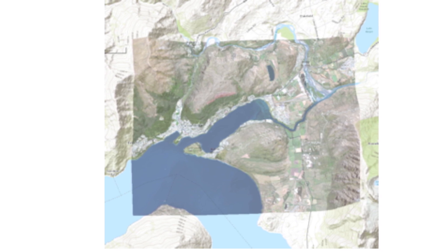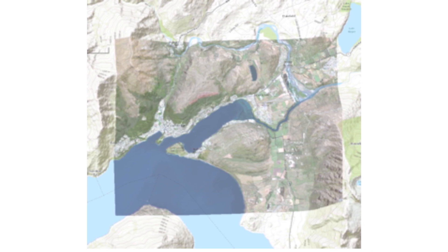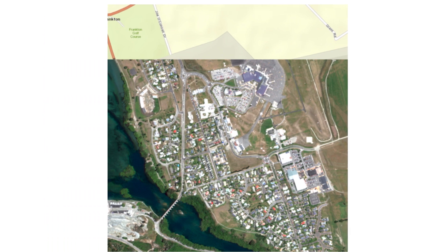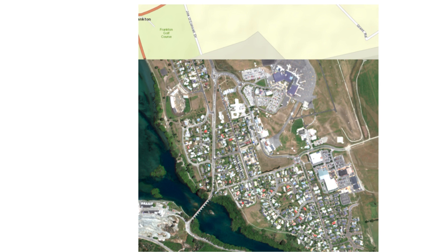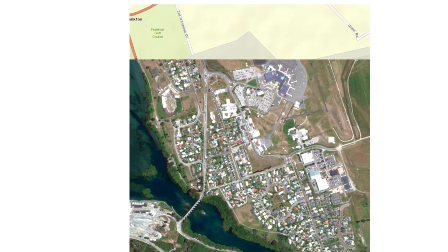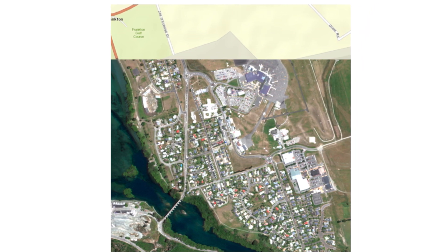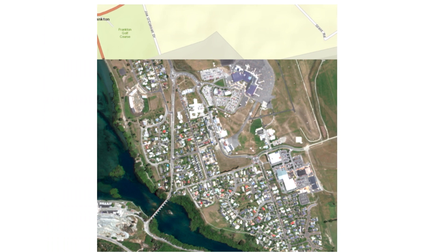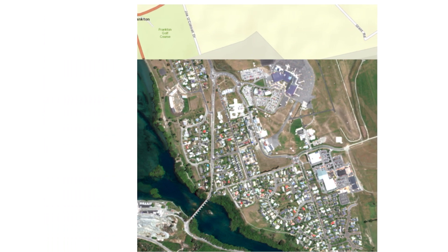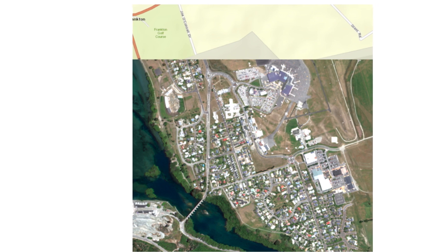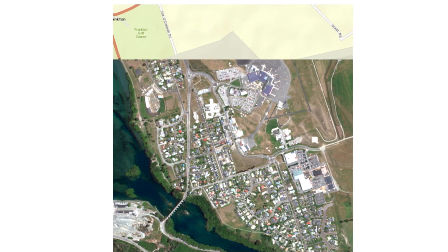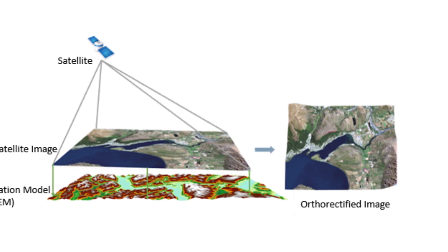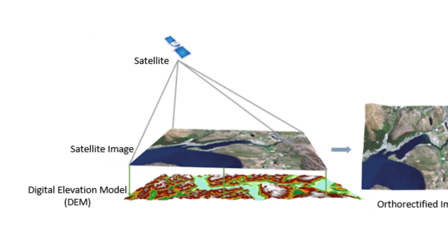Because of this precise registration, the scale is constant throughout the entire image, and the image is free of artifacts such as crooked line features caused by relief displacement. These properties make orthoimagery map accurate and the clear choice for applications that require accurate positional information and precise measurement of features. An orthorectified image has the geometric qualities of a map — ground features are displayed in their true x, y position because relief displacements caused by the terrain have been removed.